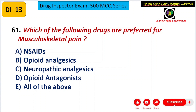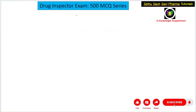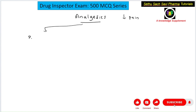The question asks which drug is preferred for musculoskeletal pain. Drugs given to reduce pain are called analgesics — those given to decrease or reduce pain. Analgesics can be divided into two main categories: peripherally acting analgesics and centrally acting analgesics.